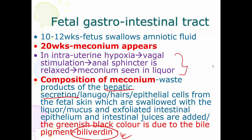This part is important — always remember, when there is meconium in the amniotic liquor, always think of fetal distress. In intrauterine hypoxia, when there is shortage of oxygen in the fetus, there will be vagal stimulation — that is parasympathetic stimulation — which relaxes the anal sphincter and the meconium enters the liquor.